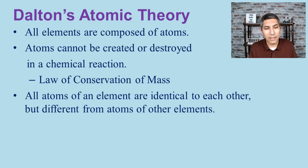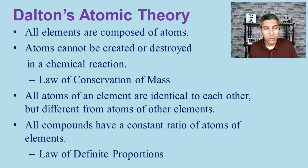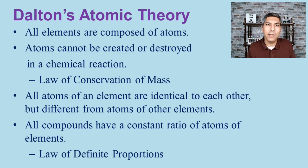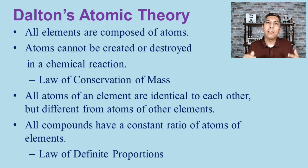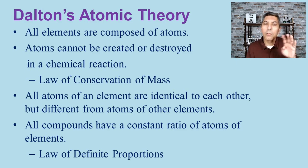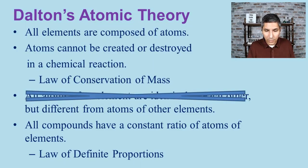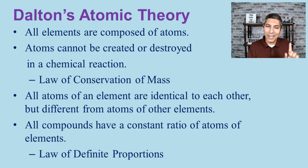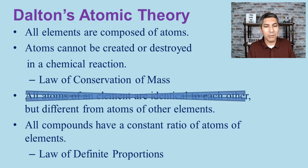Dalton also stated that all atoms of an element are identical to each other but different from atoms of other elements. Drawing on Proust's work, he explained that compounds have a constant mass ratio of elements because they have a constant ratio of atoms — for example, water is always two hydrogen atoms and one oxygen atom, H₂O. However, one part of Dalton's theory — that all atoms of an element are identical — we now know is not correct, as we'll discuss in an upcoming video.